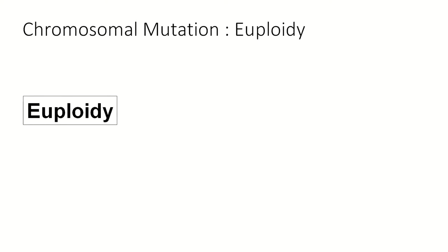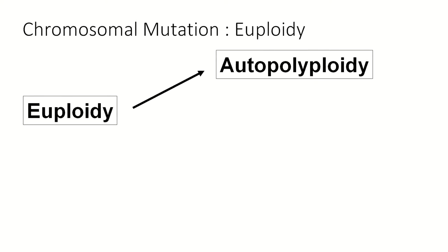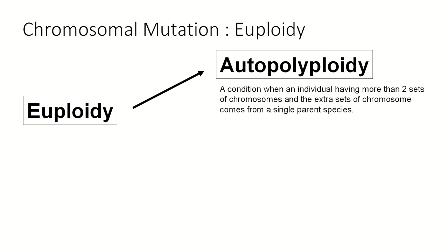Euploidy or polyploidy can be divided into two types. The first one is autopolyploidy, which is a condition when an individual has more than two sets of chromosomes. Because we are diploid individuals, we have two sets of chromosomes, but for autopolyploidy they have more than two sets of chromosomes, and the extra sets come from just a single parent species.